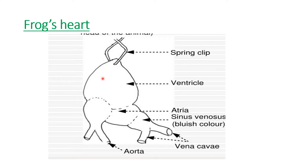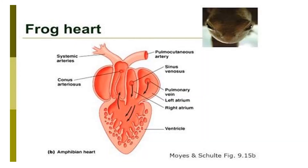Here again is the same diagram showing the ventricle, atria, sinus venosus, vena cava, and aorta. When you look at the frog's heart dorsally, you can see the opening of the sinus venosus into the right atrium, and again an opening in the left atrium for the pulmonary vein. The oxygenated and deoxygenated blood then come into the ventricle.